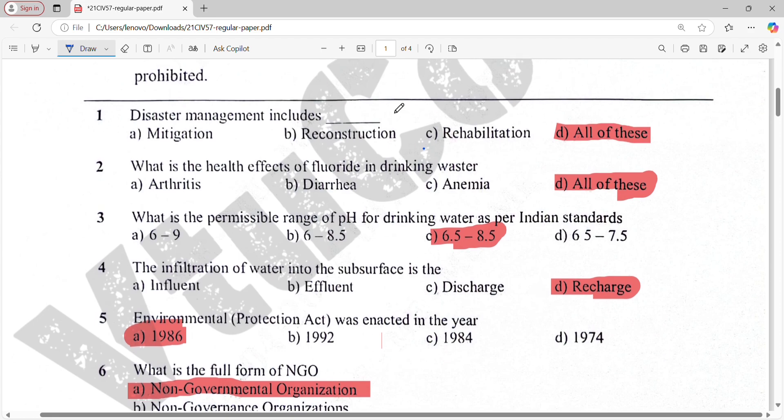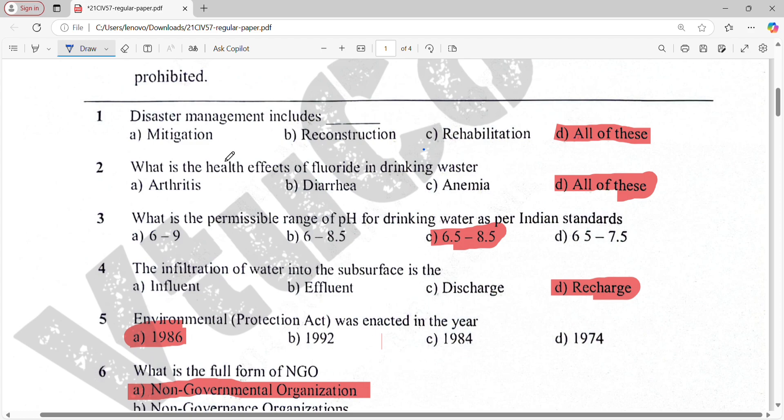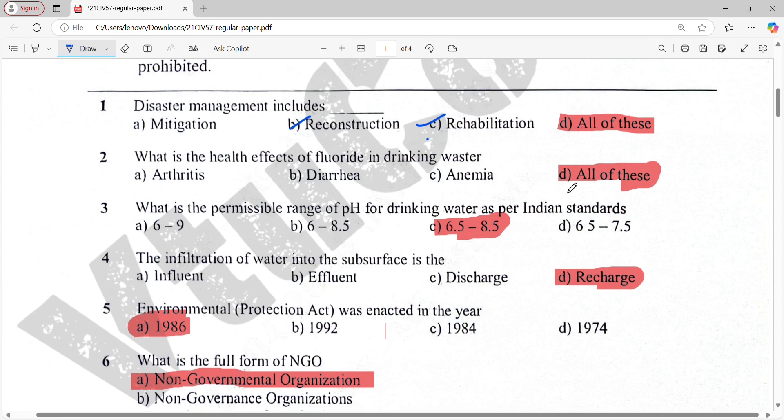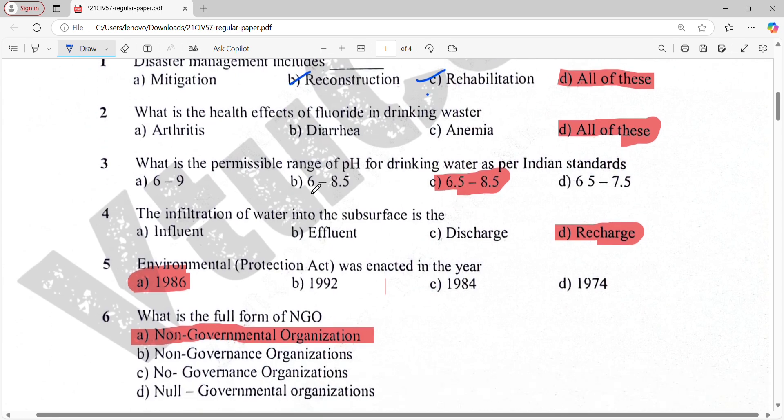First question: disaster management includes all of these - mitigation, reconstruction, and rehabilitation. Next question: what is the health effect of fluoride in drinking water? The answer is all of these. What is the permissible range of pH for drinking water as per Indian standard? That is 6.5 to 8.5.